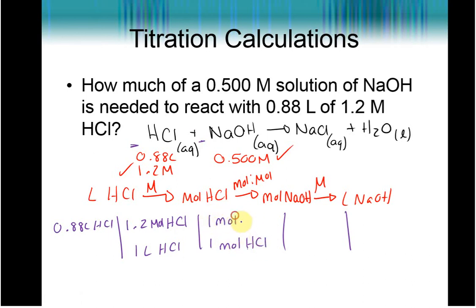According to our balanced equation, every time we react one mole of HCl, we react one mole of NaOH. And then, according to this molarity, if we have 0.500 moles of NaOH, we have one liter of NaOH. So in your calculator, checking our units, liters cancels, moles of HCl, and moles of NaOH cancel. So in your calculator, you have 0.88 times 1.2 divided by 0.5. And you end up getting something like 2.1 liters of NaOH.